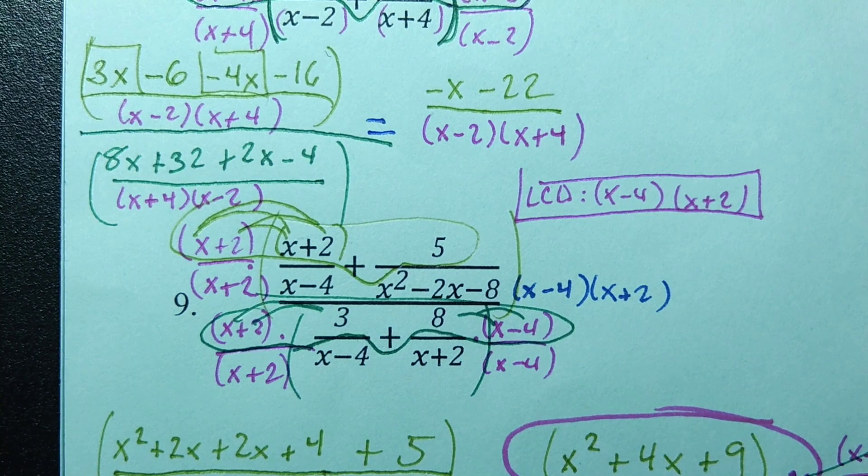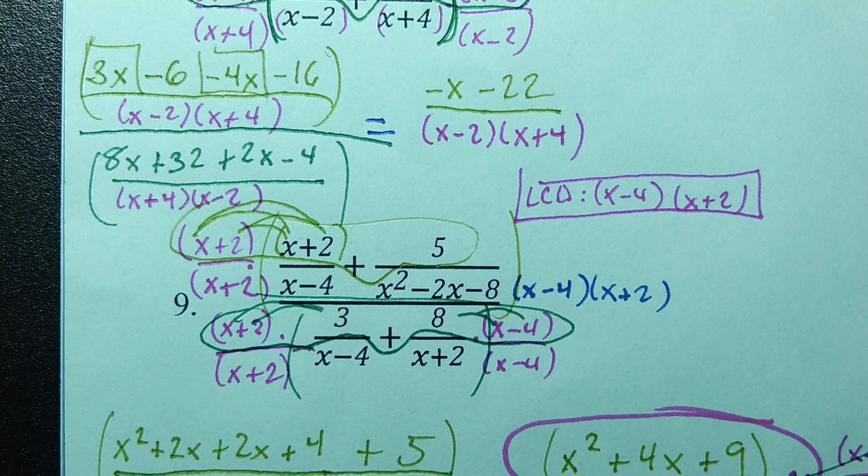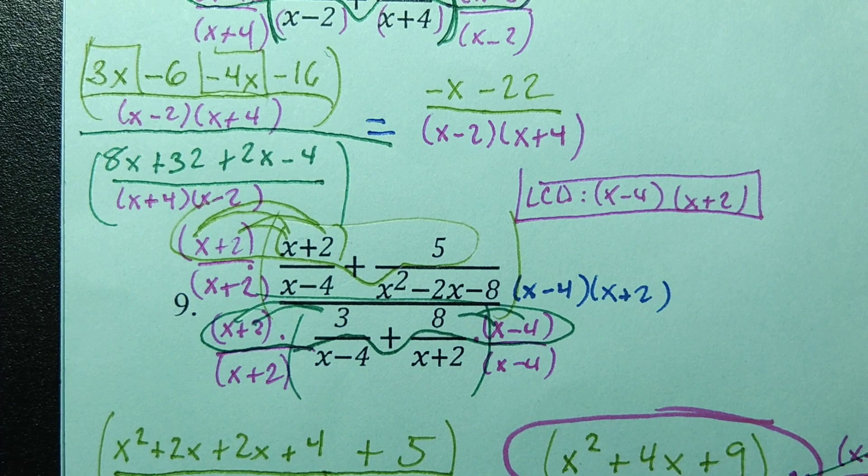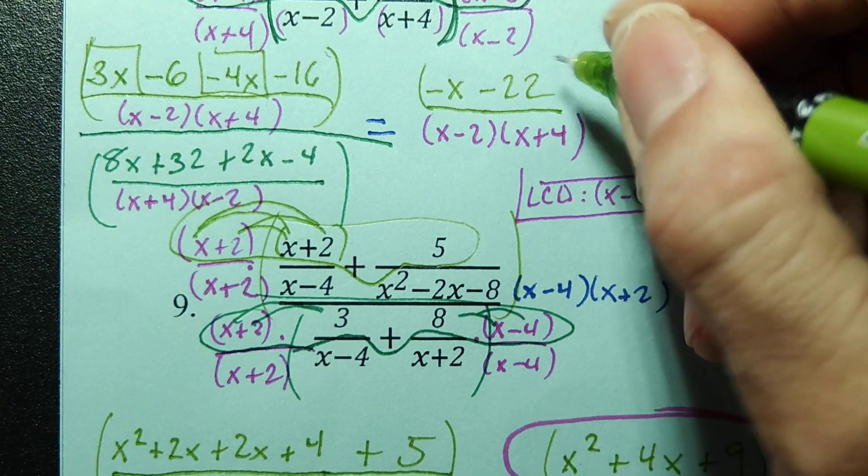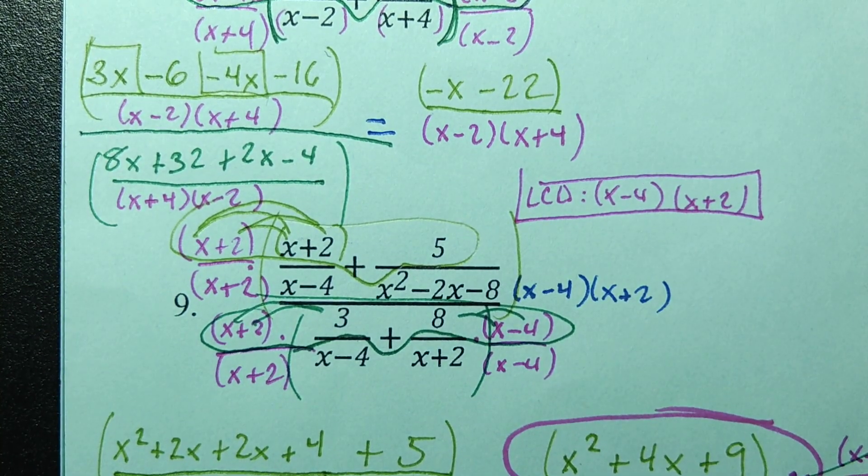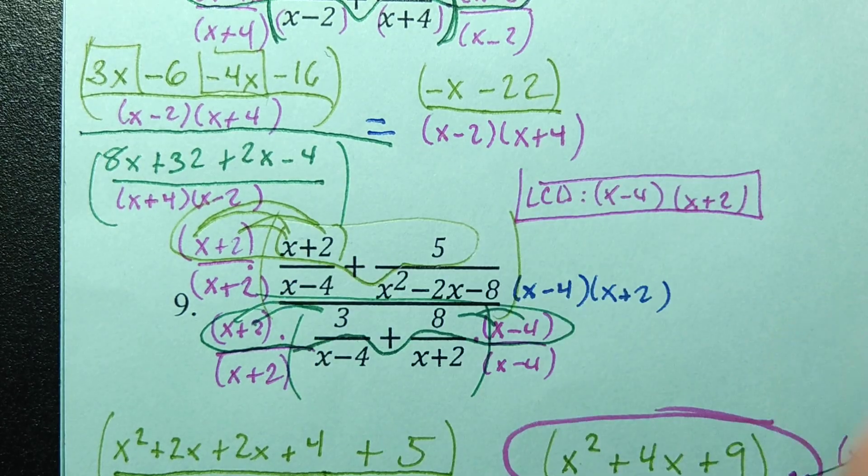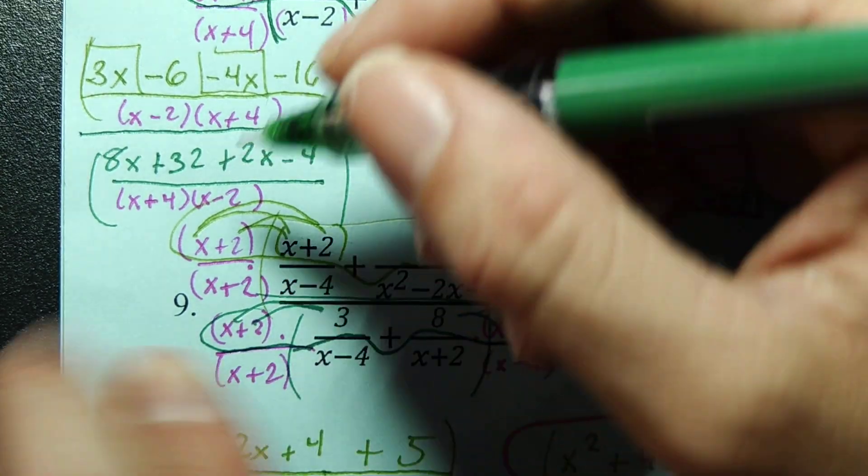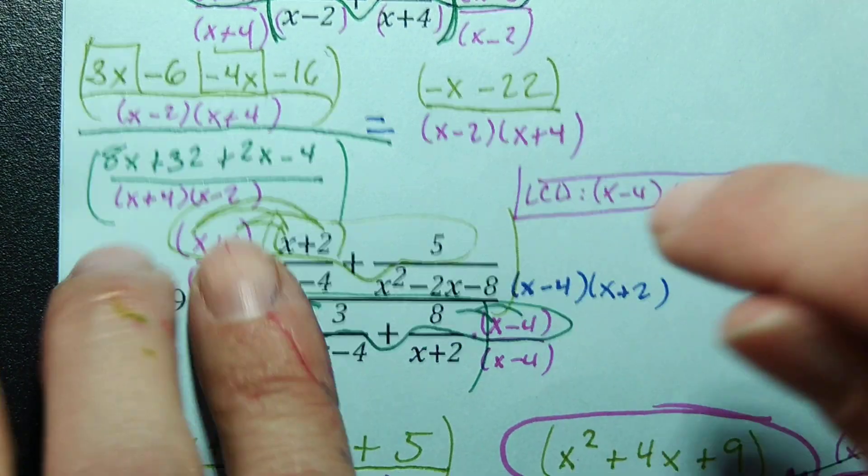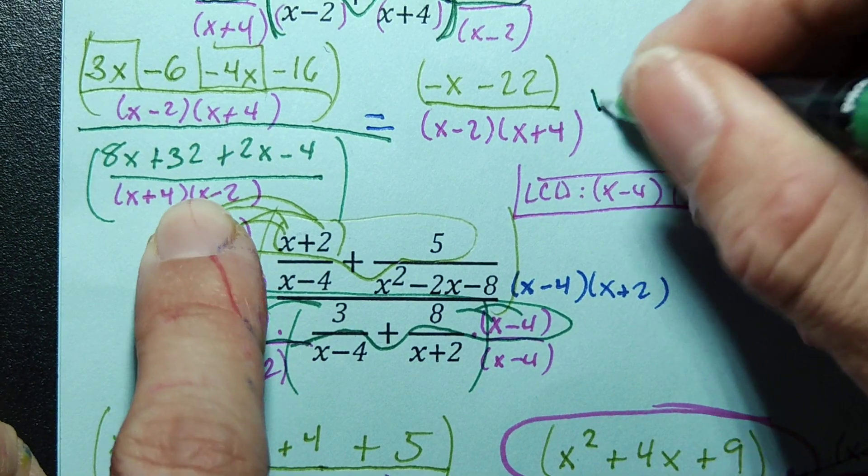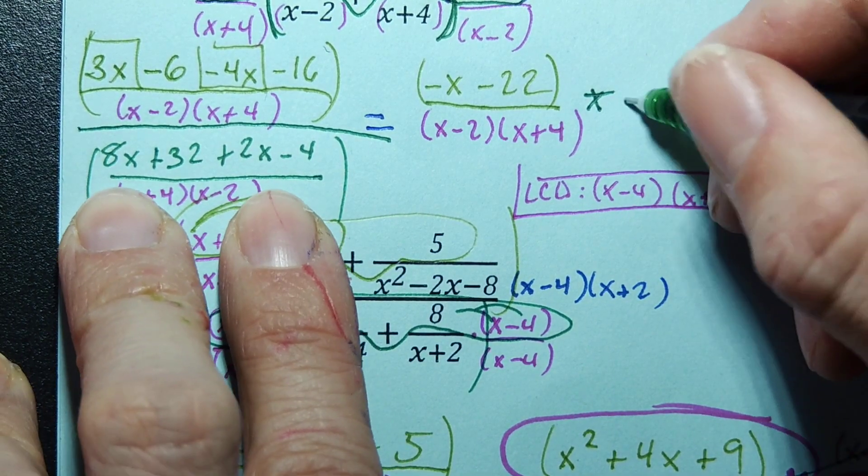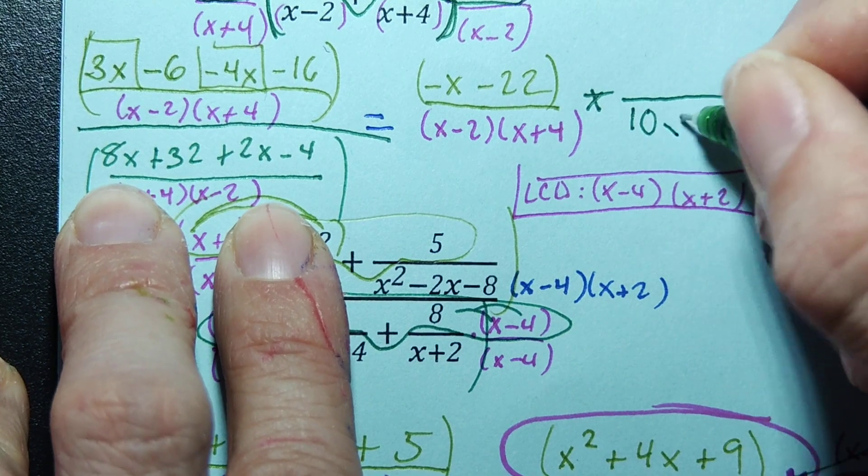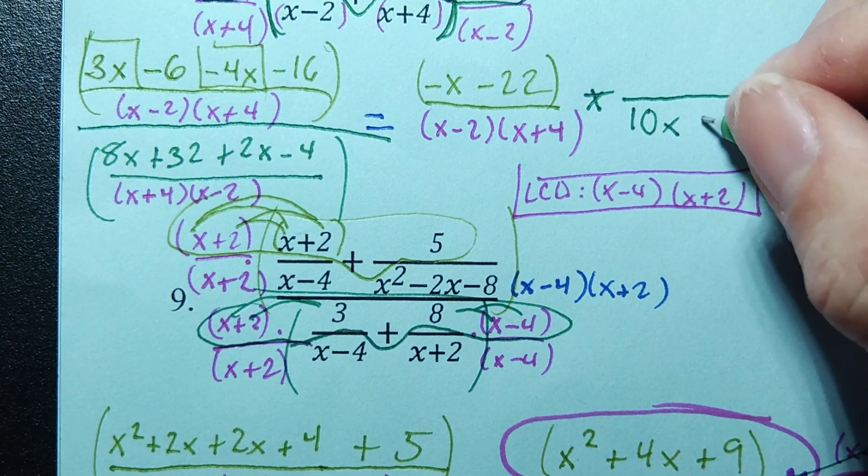Now, can we factor anything on the top? No. I mean, we could take out a negative 1, but that's not going to do anything canceling out-wise for us, so I'm just going to go ahead and trap that in parentheses. And then, because I'm running out of room, I'm going to combine my like terms and reciprocalize that bottom fraction. So, combining my like terms, we'll get 10x. It's going to go to the bottom. 32 minus 4 is 28.